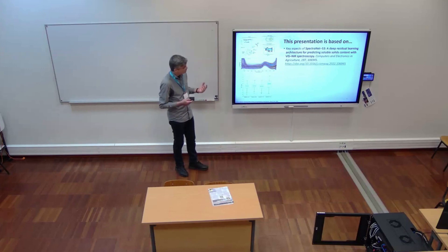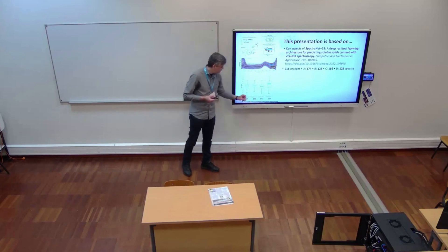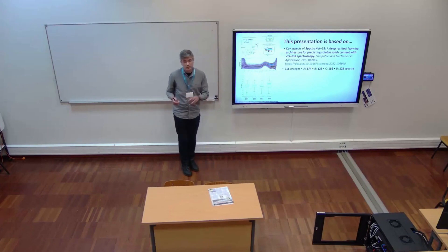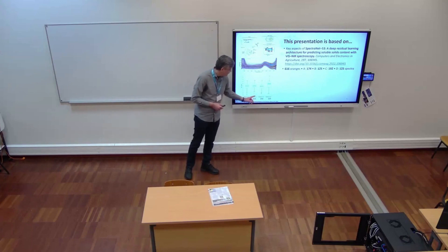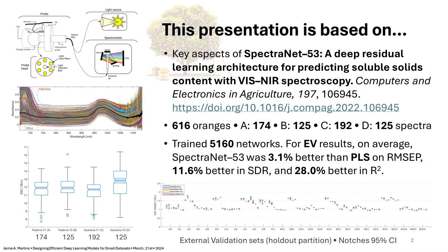We had four validation conditions: two different orchards and two consecutive years, giving datasets A, B, C, and D — two orchards for year one and year two. This is the Brix distribution of each partition. We had 174 oranges in one partition, 125, 192, and 125 in the others.